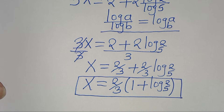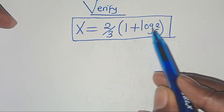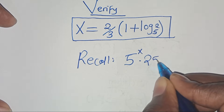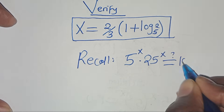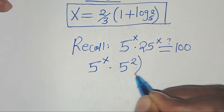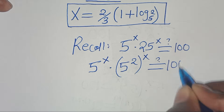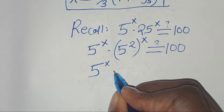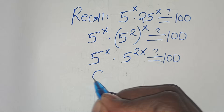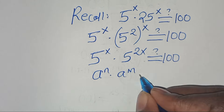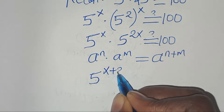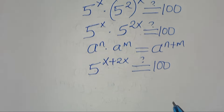Let's verify that this value of x satisfies the equation. We have 5 to the power of x multiplied by 25 to the power of x, which should equal 100. This is 5 to the power of x times 5 squared raised to the power of x, which gives 5 to the power of x times 5 to the power of 2x. Using the rule a^n times a^m equals a^(n+m), this is 5 to the power of x plus 2x, which equals 5 to the power of 3x, and should equal 100.